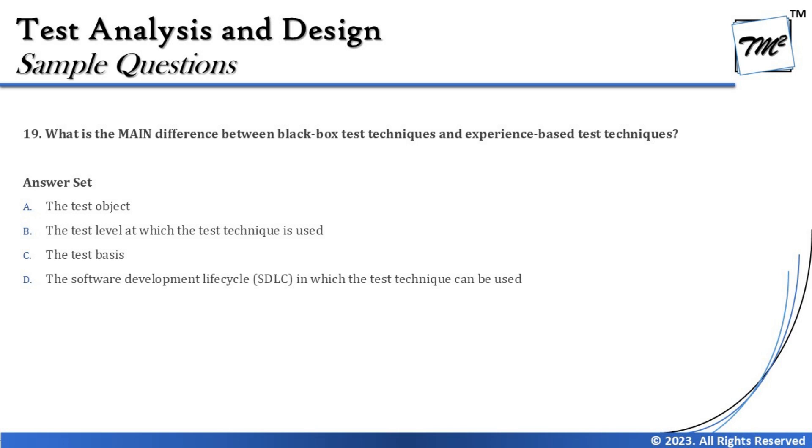Option C says the test basis. Yes, that's pretty much correct, because in our tutorials we clearly highlighted that the bases are different. For black box test techniques we need detailed requirements. For white box testing techniques we need code access and knowledge of code, and for experience-based testing we need past experience, domain knowledge, and knowledge of typical defects. So the bases are certainly different.